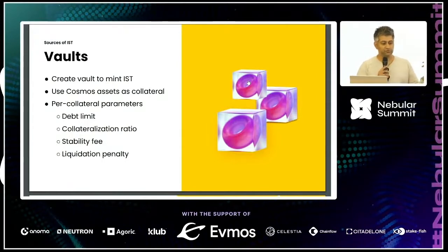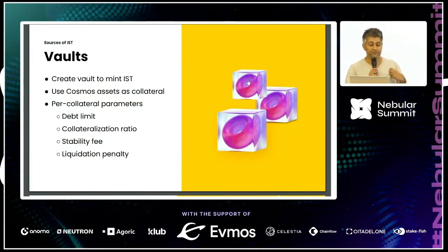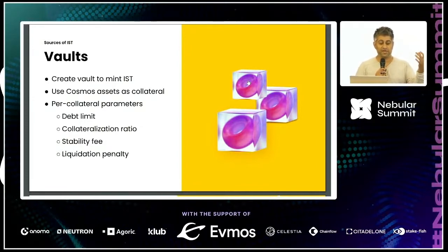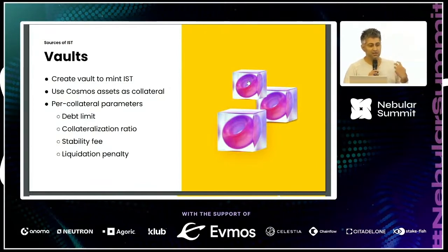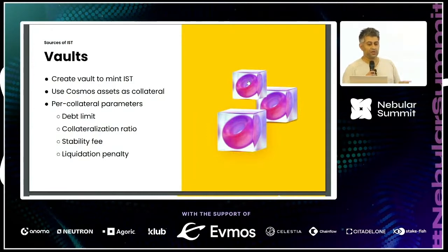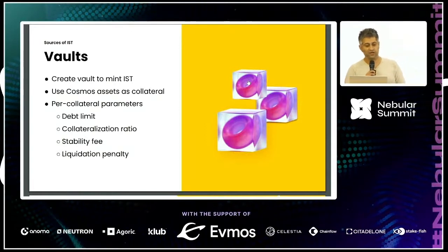The vault user experience: there's going to be an economic committee and a vote of BLD holders that determines collateralization ratios. For example, if I want to mint $100 worth of IST, I need to bring $150 worth of ATOM over IBC and lock it in a vault. Now I have my IST minted. If I want my ATOMs back, I repay the IST.